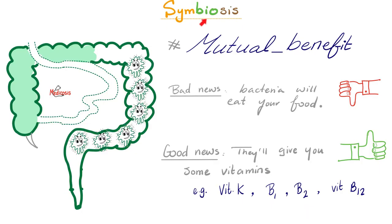There is a symbiotic relationship between you and your colonic bacteria. The bacteria take some of your food and in return give you vitamins, especially vitamin K, B1, B2, and B12. Newborns are deficient in vitamin K because the moment you were born, your gut was crystal clean with no bacteria — you had not eaten from our contaminated world yet. A few days later, the colonic bacteria will make vitamin K for you.